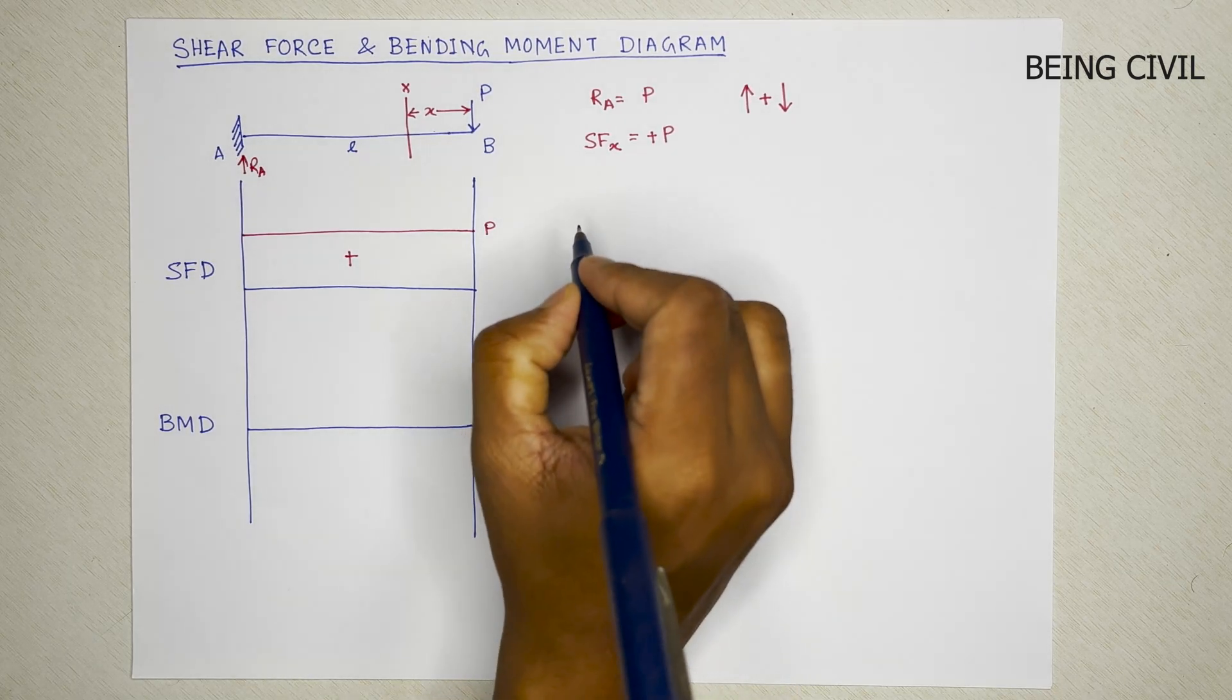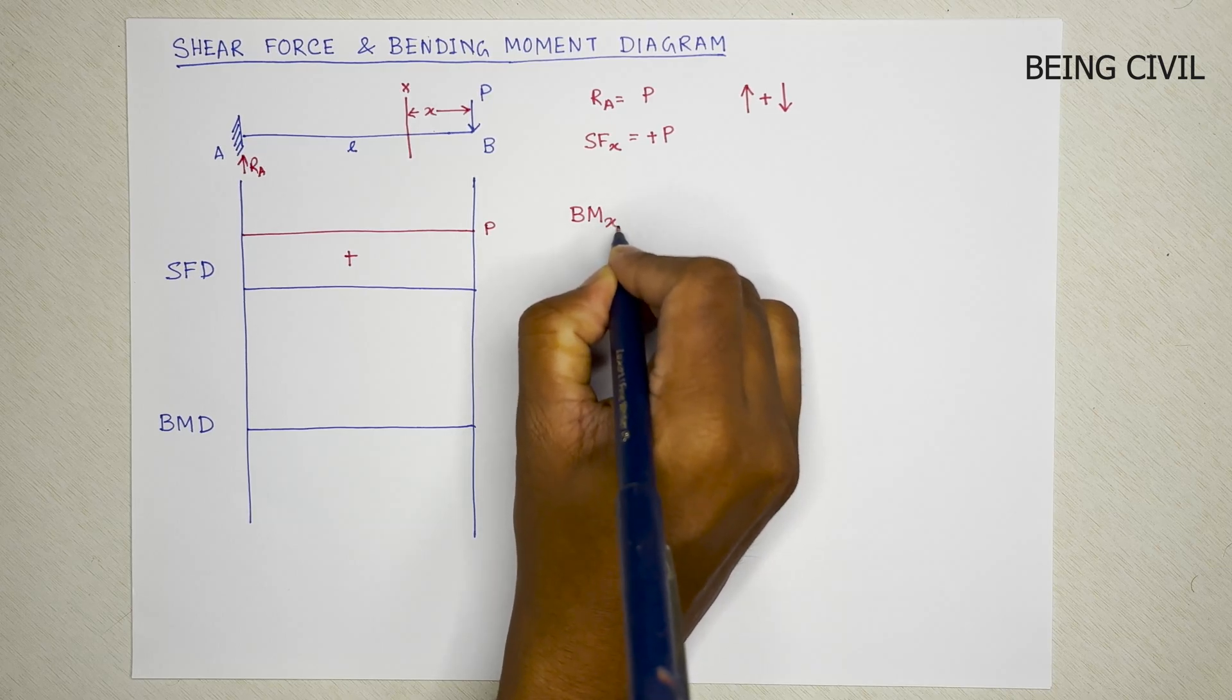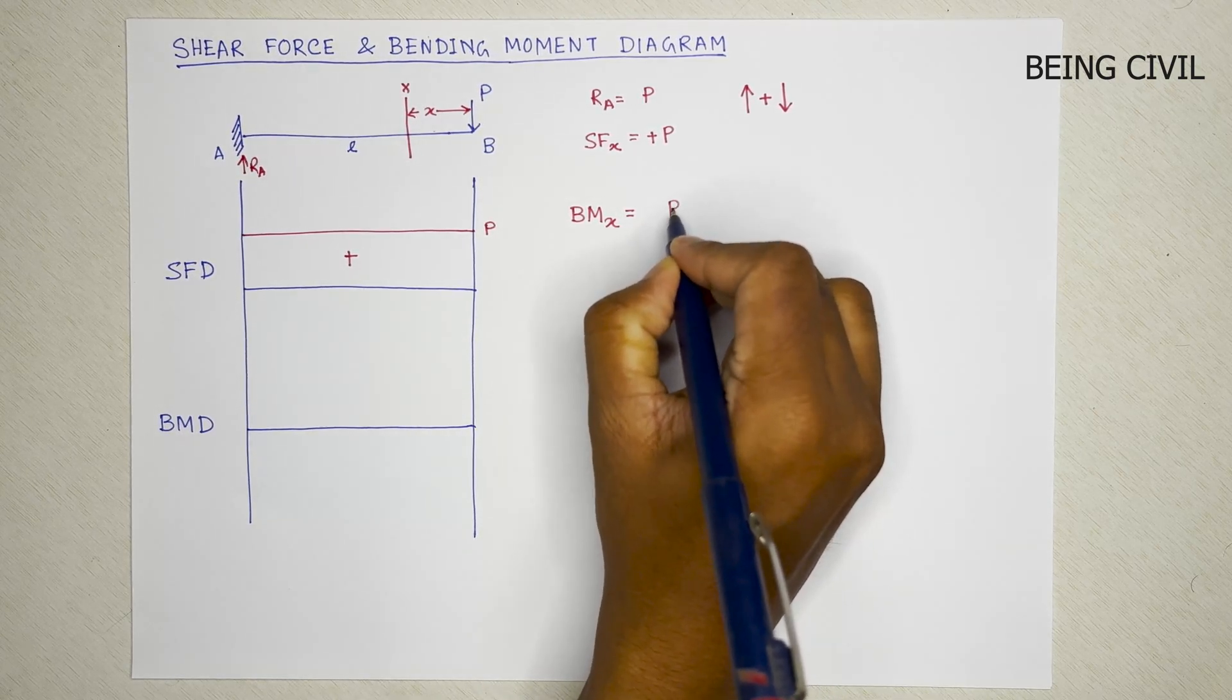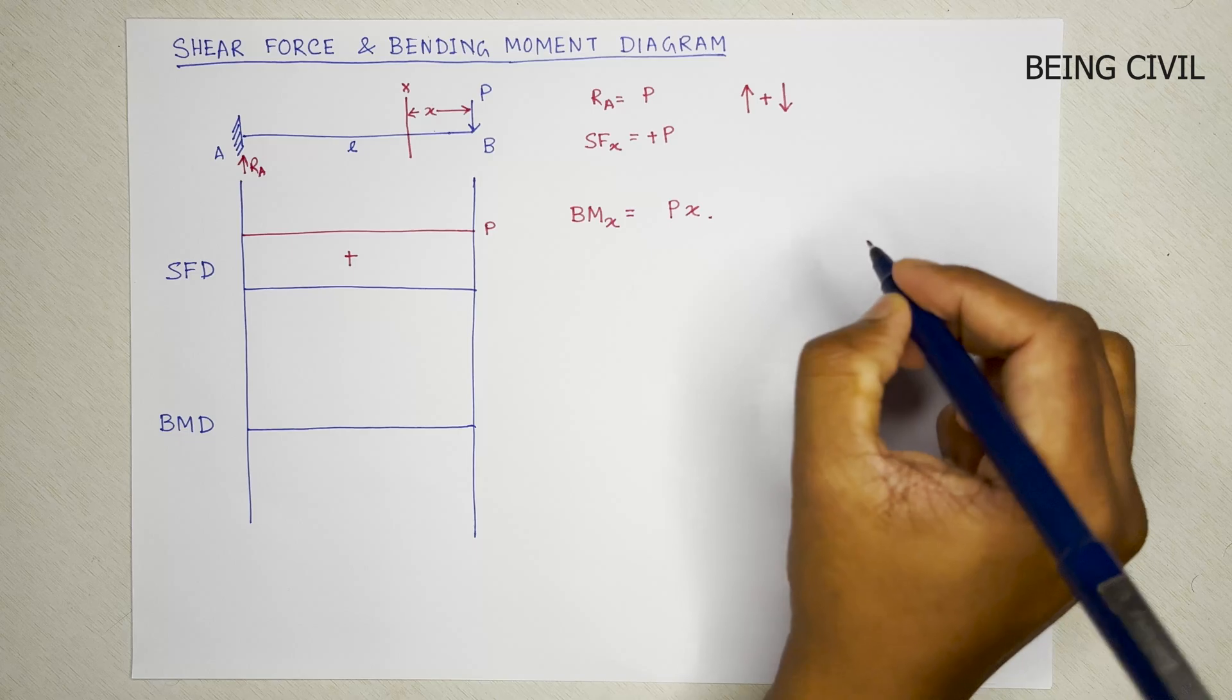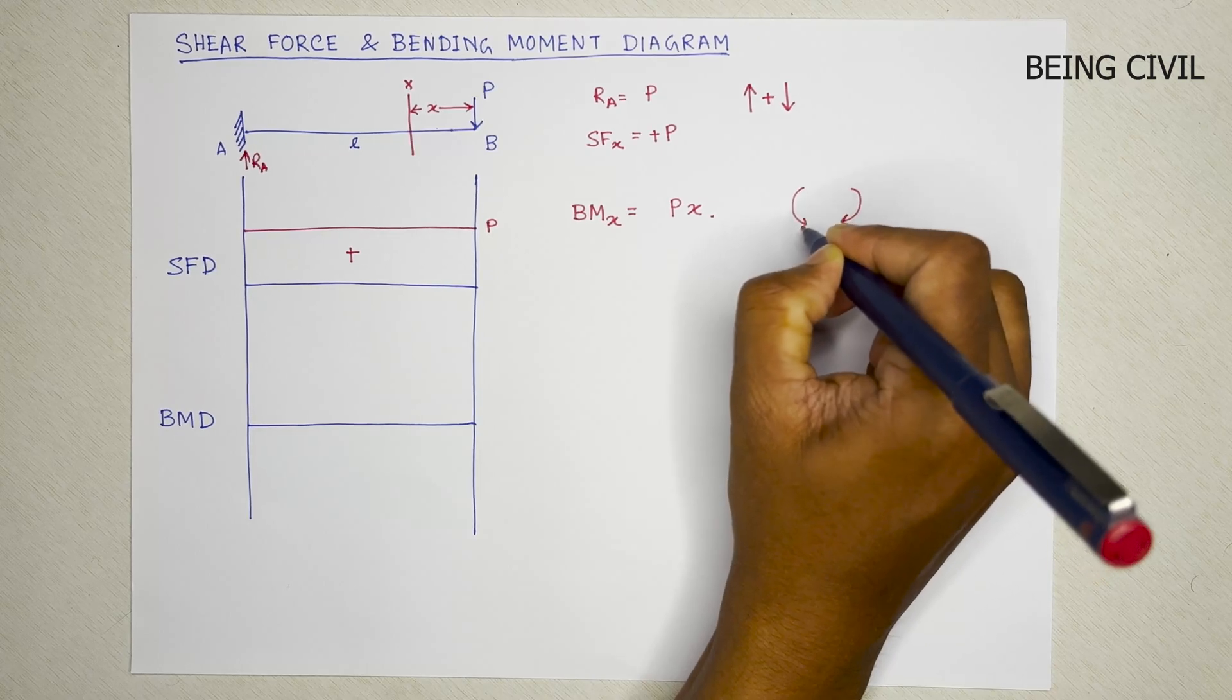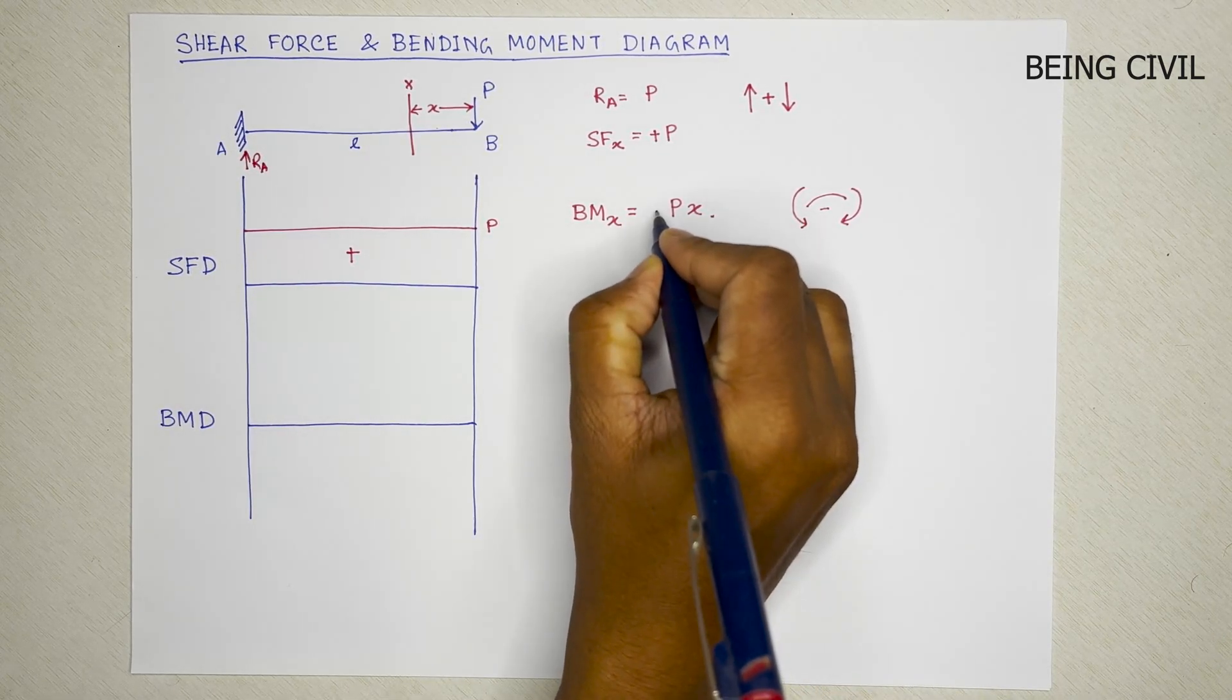Now we'll calculate the bending moment. So at this point X, the bending moment X is the force into this distance, so P into X. And the sign, if you see this section, the bending moment is of this nature. This is hogging, so it will be negative.